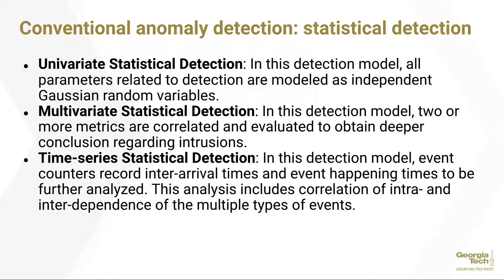The statistical detection models use three broad approaches. Univariate statistical detection, in which all parameters related to detection are modeled as independent Gaussian random variables. Multivariate statistical detection, where two or more metrics are correlated and evaluated to obtain conclusions about intrusions. Finally, time series statistical detection, where event counters record inter-arrival times and event happenings to be further analyzed across multiple types of events.